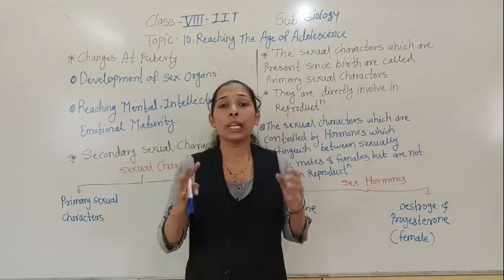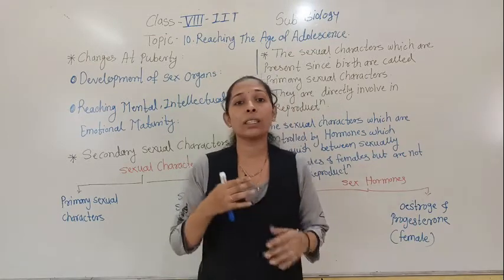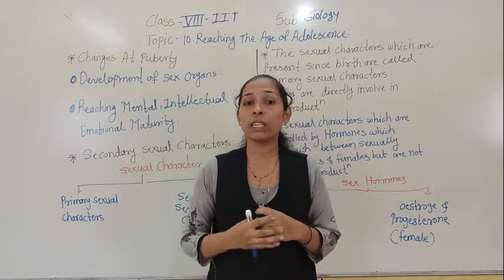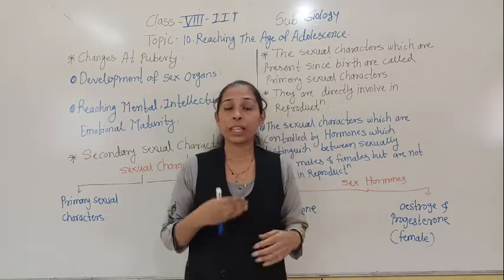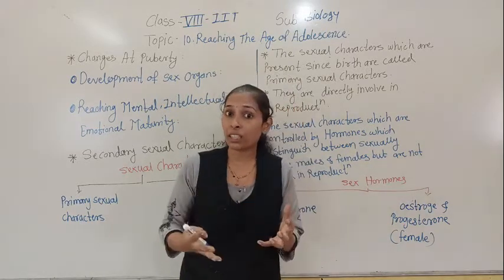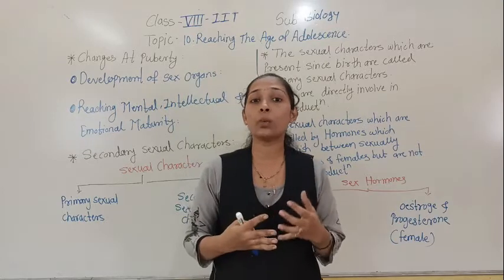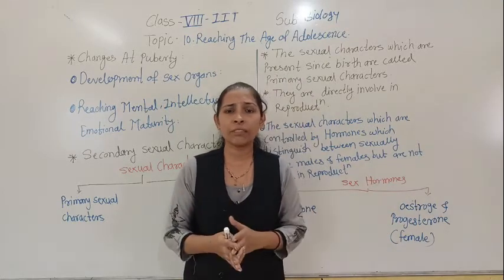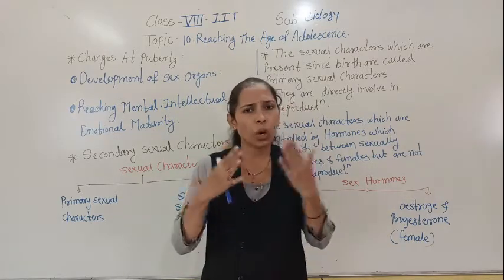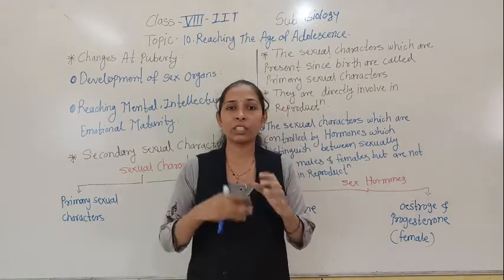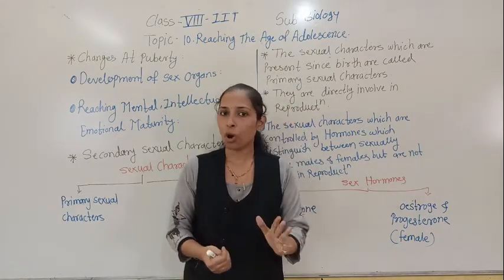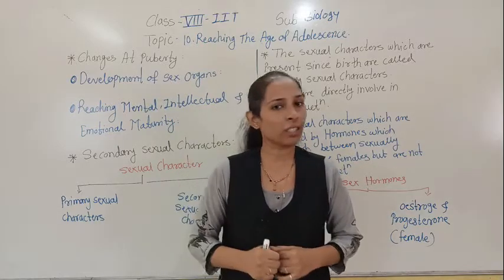During the puberty period, adolescents feel very comfortable with their friends or in their peer groups. They experience different mood swings — they become happy, sad, angry, or sometimes they lose their temper. Sometimes they will be confused, sometimes they will be very excited. All these changes take place in their body because of a chemical substance, a hormone, which we are going to see in the next session.